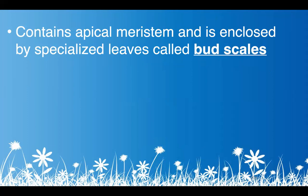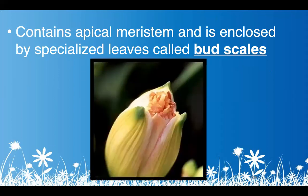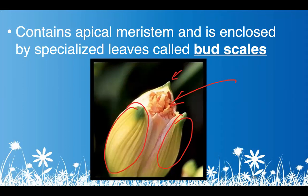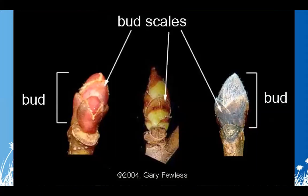Buds contain apical meristem and are protected by specialized leaves called bud scales. This is the bud of a flower — the flower petals are inside. When something is blooming, pay special attention to the outer leaves protecting the bud before it opens — those are called bud scales. Here are three different apical buds showing the bud scales — those outer leaves protecting the not-yet-opened bud.